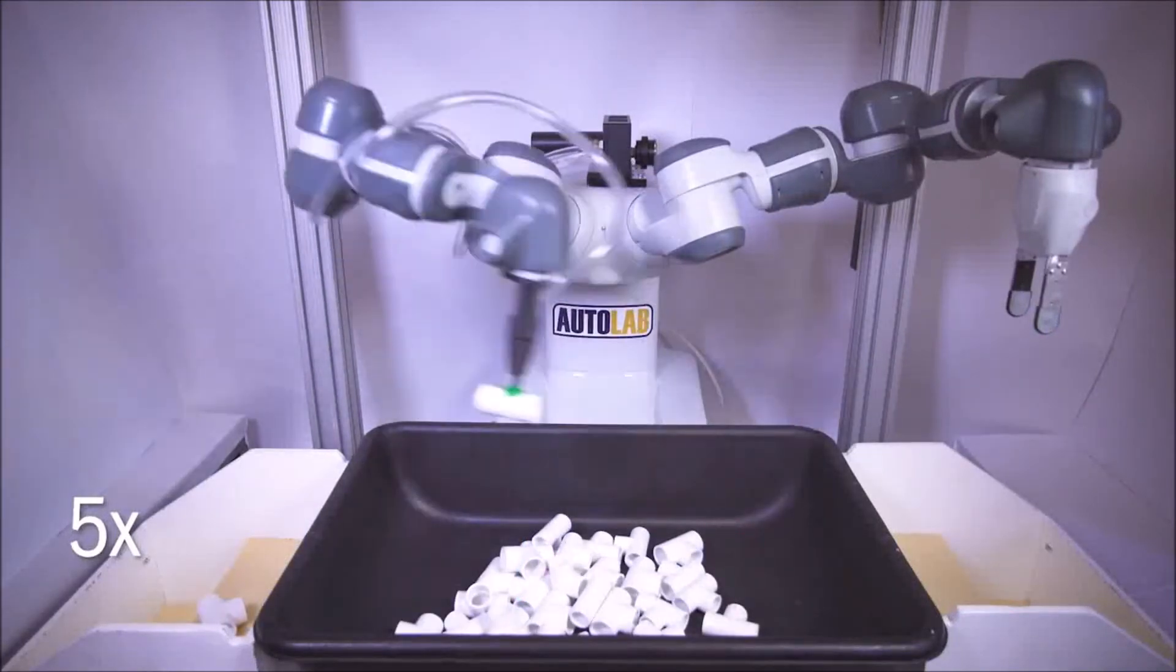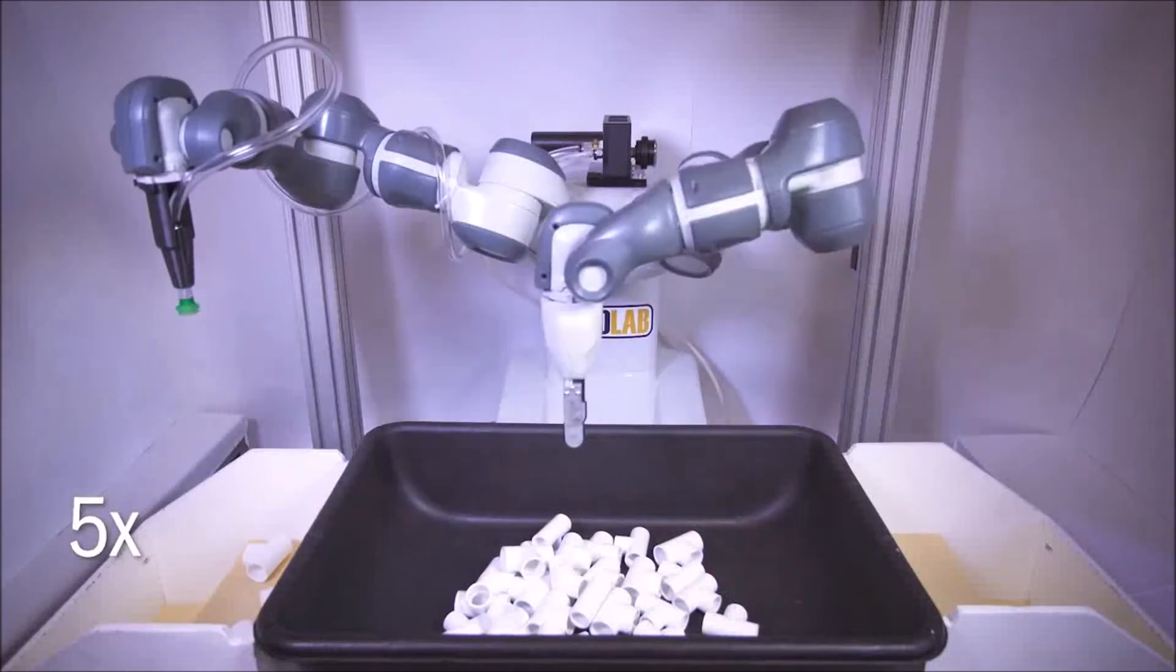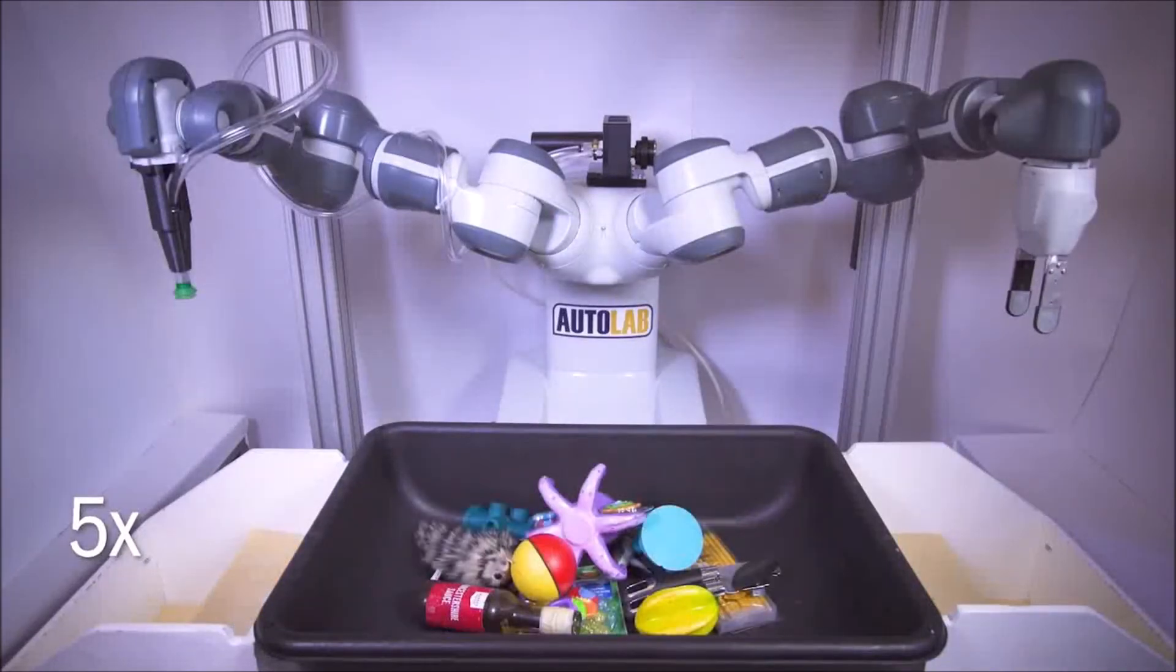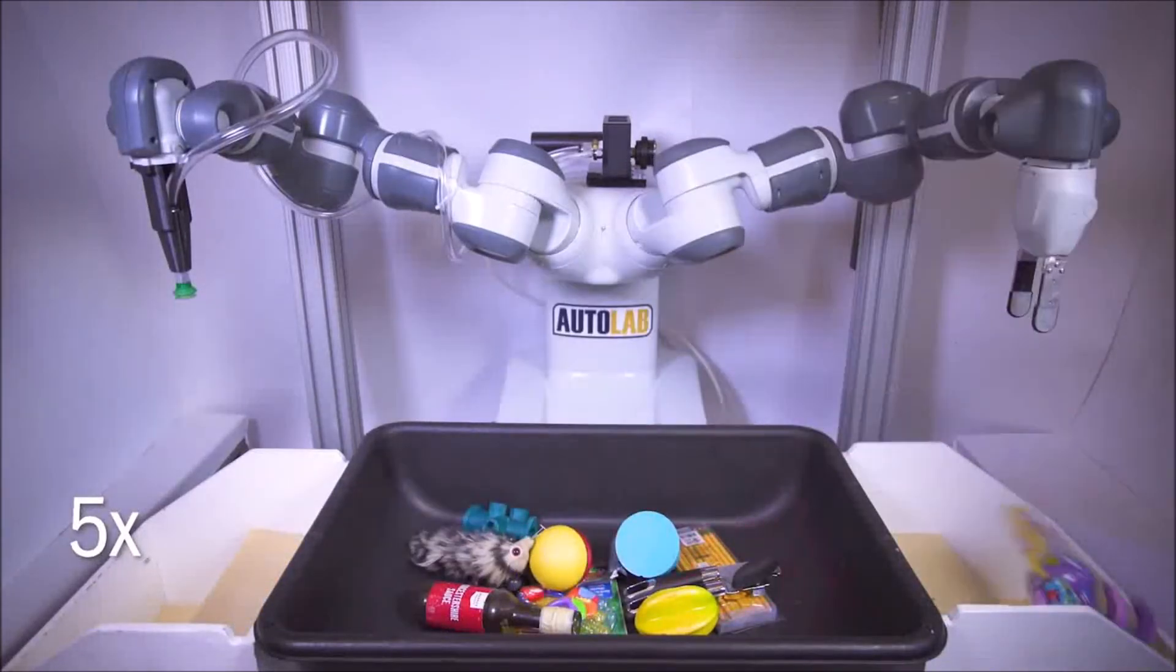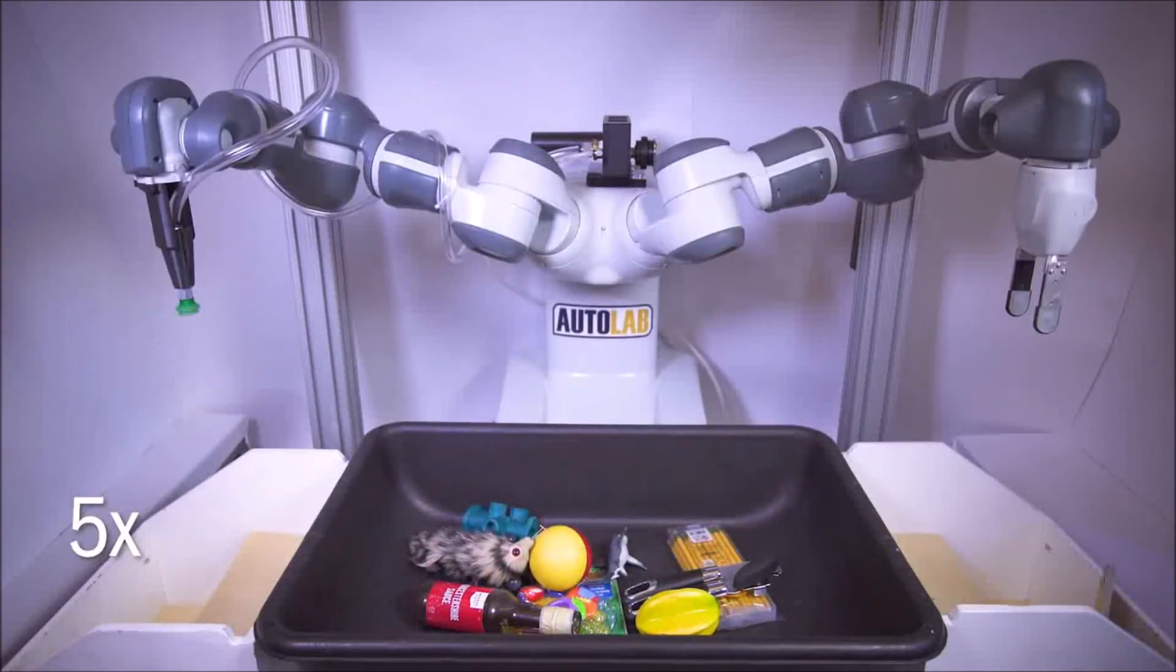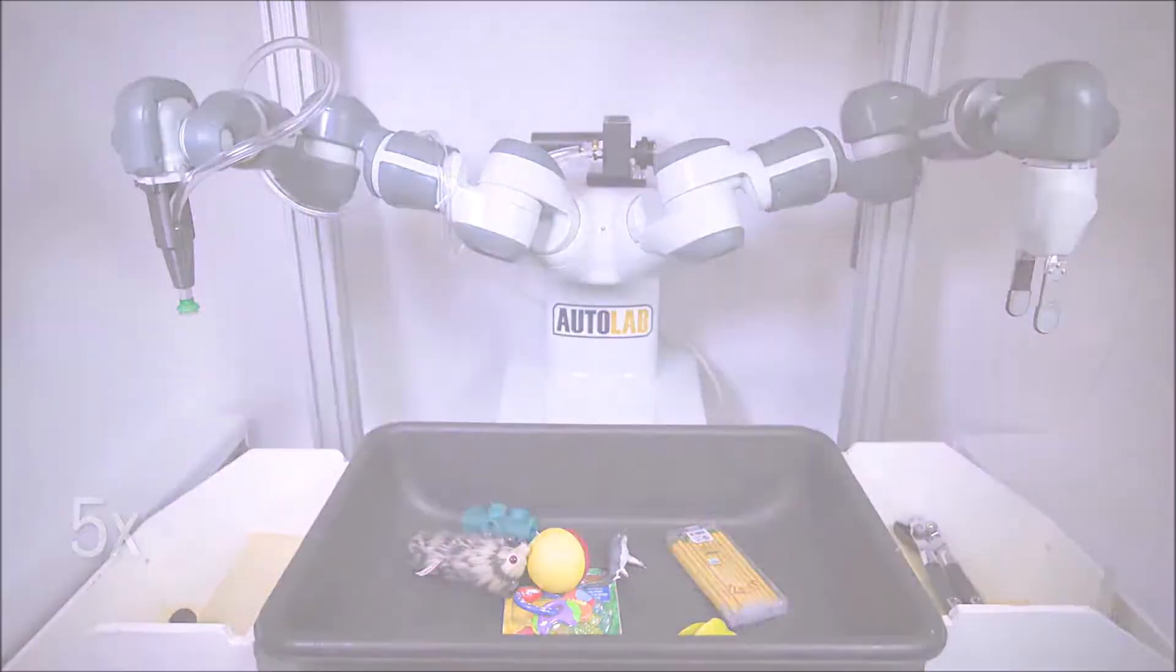On this robot with two grippers, the DexNet 4.0 policy consistently clears bins of up to 25 previously unseen objects to achieve a rate of over 300 picks per hour with 95% reliability.